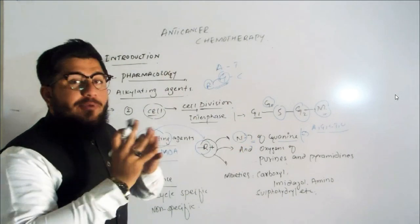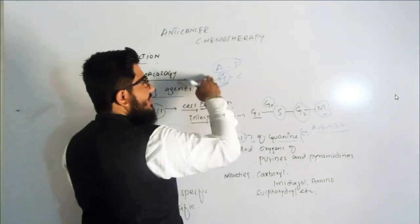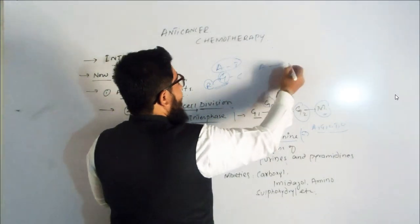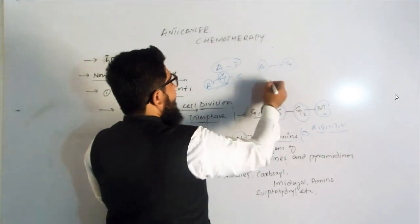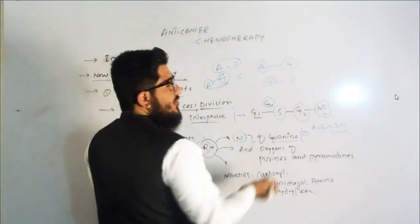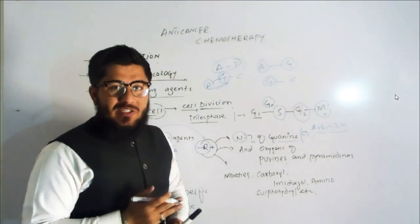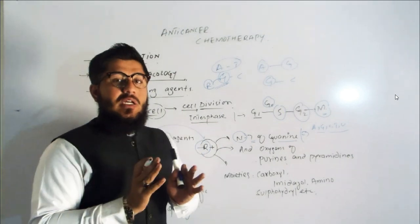What will happen? Abnormal base pairing will take place. Before it was combining—adenine with thymine—now adenine with thymine is no longer available. It might be that adenine will combine with guanine, and guanine will combine with cytosine, or somehow like that. So abnormal base pairing will take place.